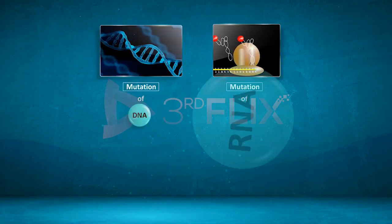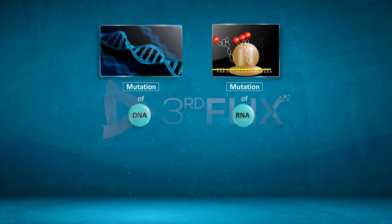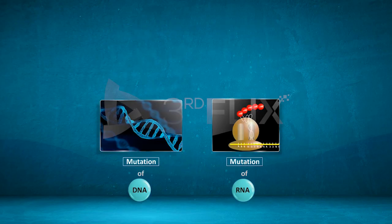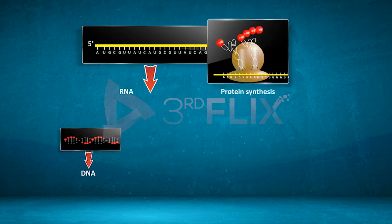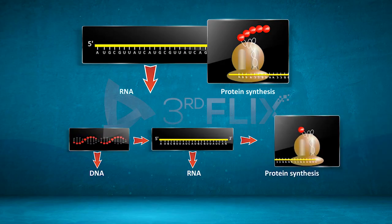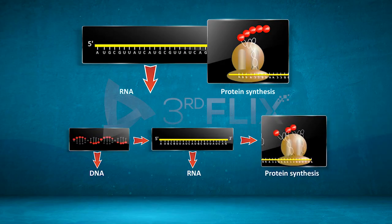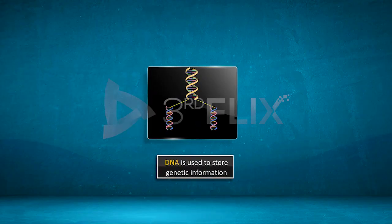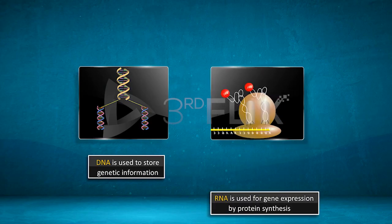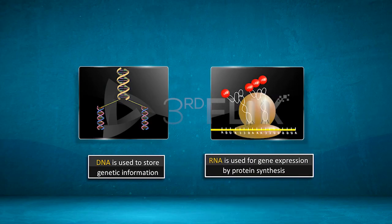Both DNA and RNA undergo mutations, but RNA mutates at a faster rate as it is unstable. RNA directly codes for protein synthesis while DNA depends on RNA for the same. In conclusion, DNA is used to store genetic information, and RNA is used for gene expression by protein synthesis.